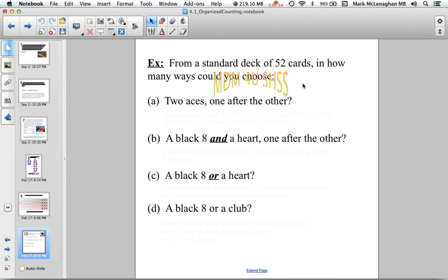Looking at the deck of cards, how many ways could we choose two aces one after the other? There's four ways of choosing the first ace. Once we've chosen it, there's only three ways of choosing the second ace. So 4 × 3 = 12.